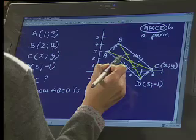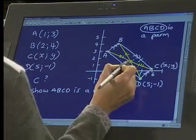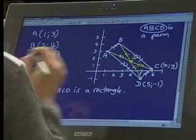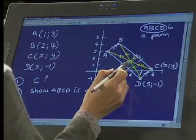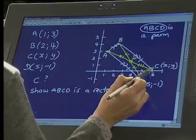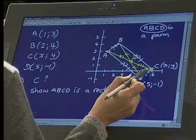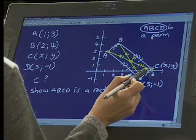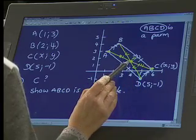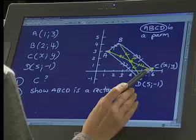So the diagonals, they bisect each other, which makes this point over here, this point P. What would point P be in relation to A and C? What's special about point P on the segment AC? It's a midpoint. Lovely. It's the midpoint of AC.